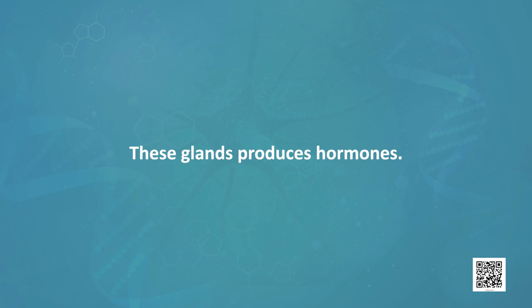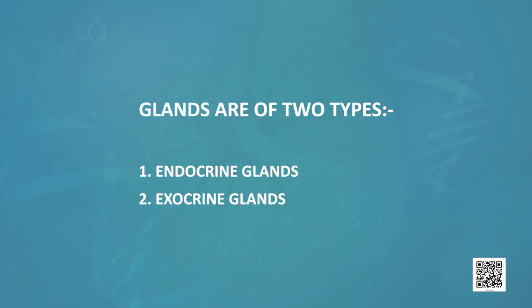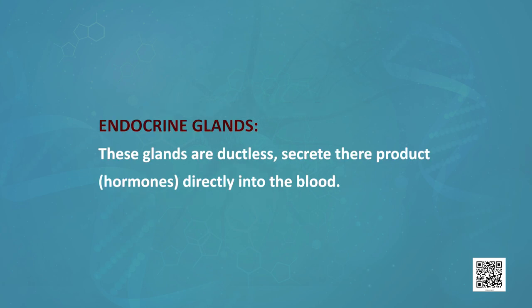Before discussing the endocrine system we need to discuss glands. Glands are specialized organs which produce hormones. Hormones are released from endocrine glands. There are two types of glands: endocrine glands and exocrine glands. Endocrine glands are ductless and release their products — hormones — directly into the bloodstream, while exocrine glands have a duct system, for example sweat glands. Here we will discuss endocrine glands only — the glands which secrete hormones directly into the blood.